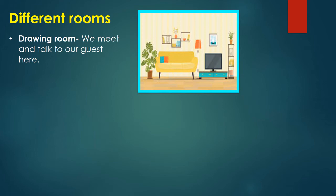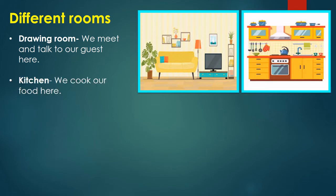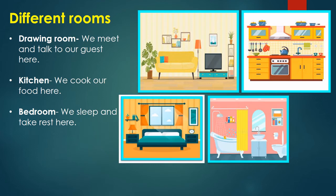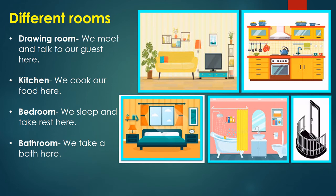The next room is our kitchen, where we cook our food. The next room is our bedroom, where we can take rest, sleep, and nobody disturbs us. The fourth one is the bathroom — we take bath in our bathroom. And the last one is balconies — balconies are the open areas where we spend time looking outside.